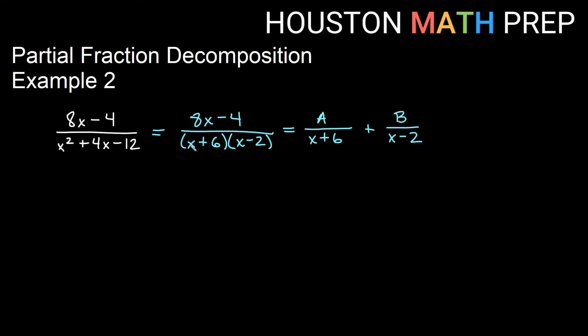And if we think about what we would get when we multiply and get common denominator, the original one wouldn't change, so we'll get 8x minus 4 as our numerator after we get common denominator. Multiplying into the A fraction, we would need the x minus 2 factor to get a common denominator. So in the top, we would have A times x minus 2.